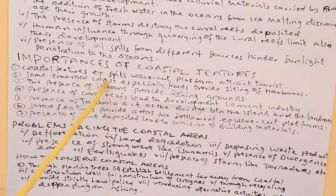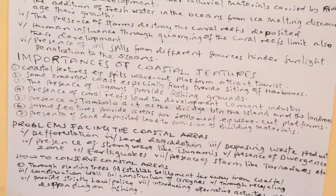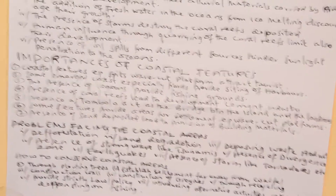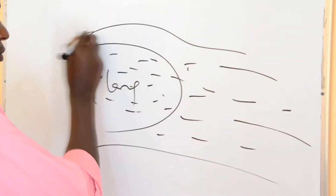There are some coastal features where most people establish harbors, so that people can use them as places of interest. Another importance is that lagoons provide fishing grounds. A lagoon is formed after a cave takes place, and most fish go around that area, as shown on the blackboard.